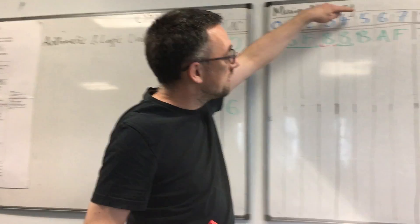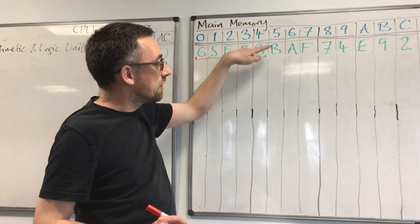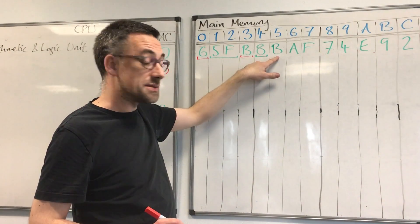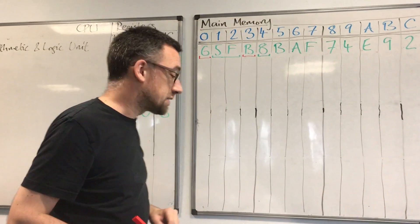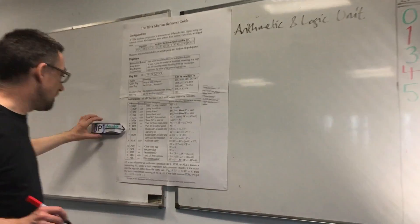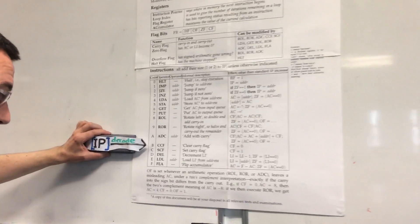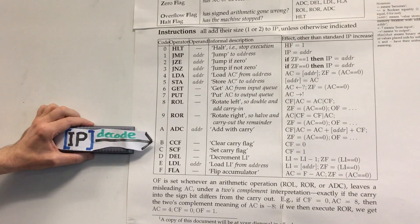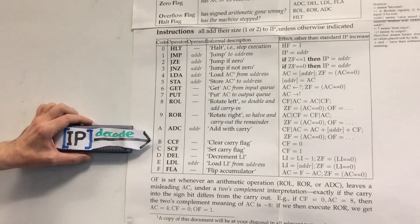So let's go to location 5 in main memory to find out the code for the operator. This time, it's B. If we go to the instruction table and decode B, we see that it's clear carry flag, and it doesn't have an operand. Let's write that in the trace.